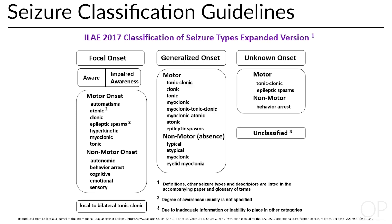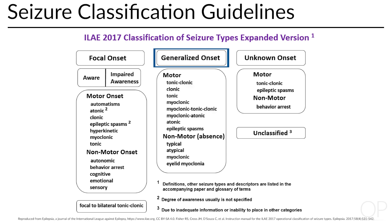Focal onset seizures are those that start in one hemisphere of the brain. They can later spread to involve both hemispheres, but it is the beginning of the seizure and not the end that is most important. Generalized seizures rapidly involve the whole brain. If the onset of seizure is missed or unclear, the seizure is of unknown onset.